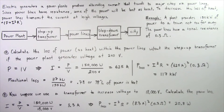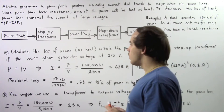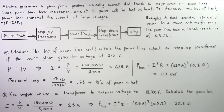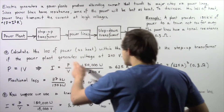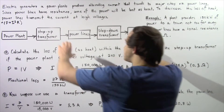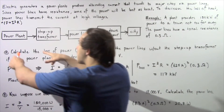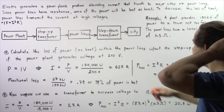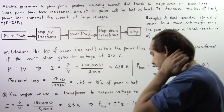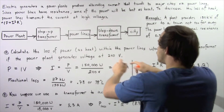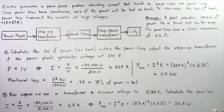Let's look at the following example. A power plant provides 150 kilowatts of power, and the power lines have a total resistance of 0.3 ohms. In Part A, we want to calculate the quantity of power lost as heat within the power lines without a step-up or step-down transformer, if the power plant generates a voltage of 240 volts. We'll explore how much power produced by the plant is actually lost as heat.